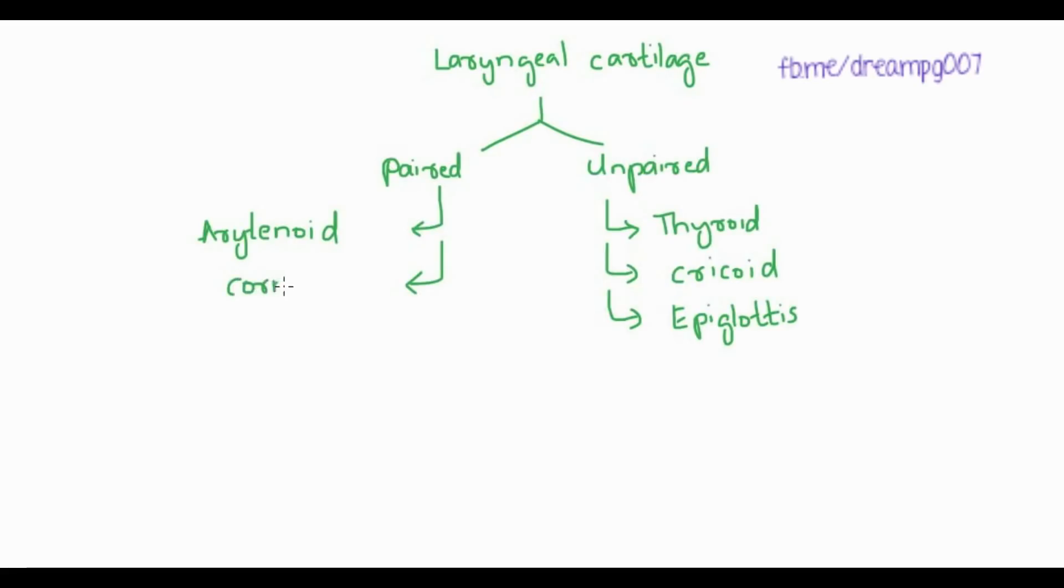Laryngeal cartilages can also be divided into paired and unpaired. The unpaired cartilages are thyroid, cricoid, and epiglottis. All other cartilages are paired: arytenoid, cuneiform, and corniculate.